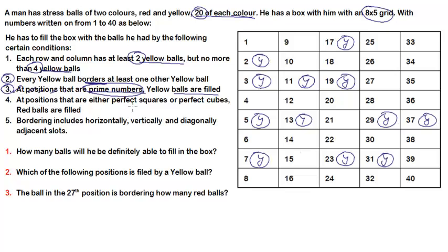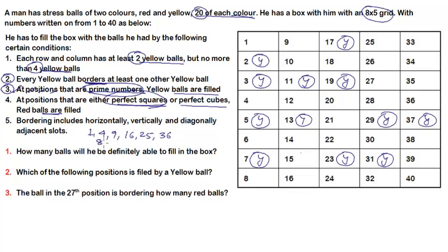The fourth condition says that at positions that are either perfect squares or perfect cubes, red balls are filled. The perfect squares up to 40 are: 1, 4, 9, 16, 25, 36. For cubes: 1 (already counted), 8, and 27. So the red ball positions from this condition are 1, 4, 8, 9, 16, 25, 27, and 36.